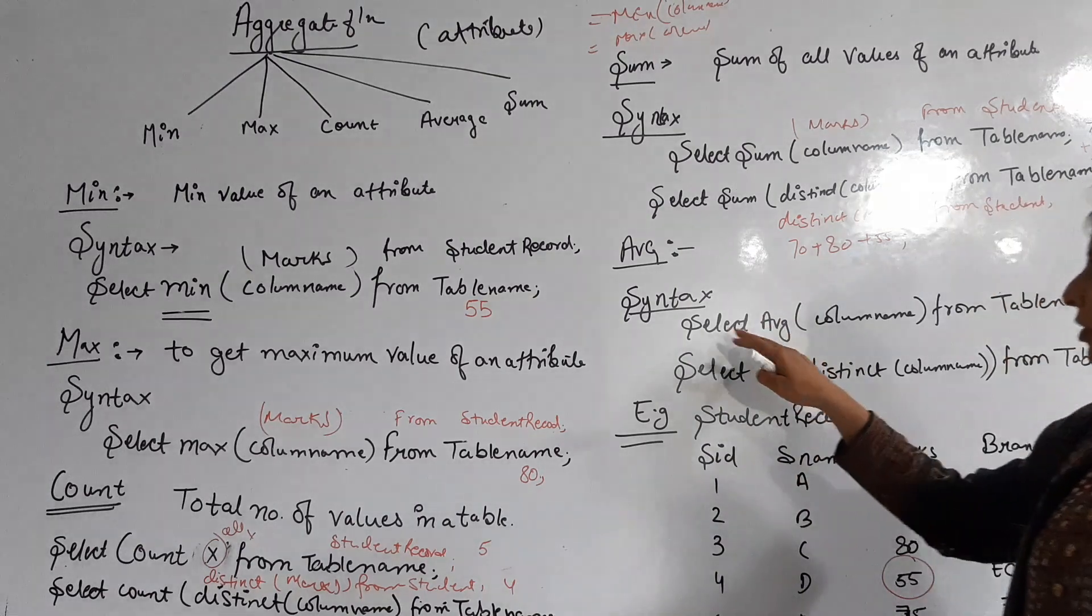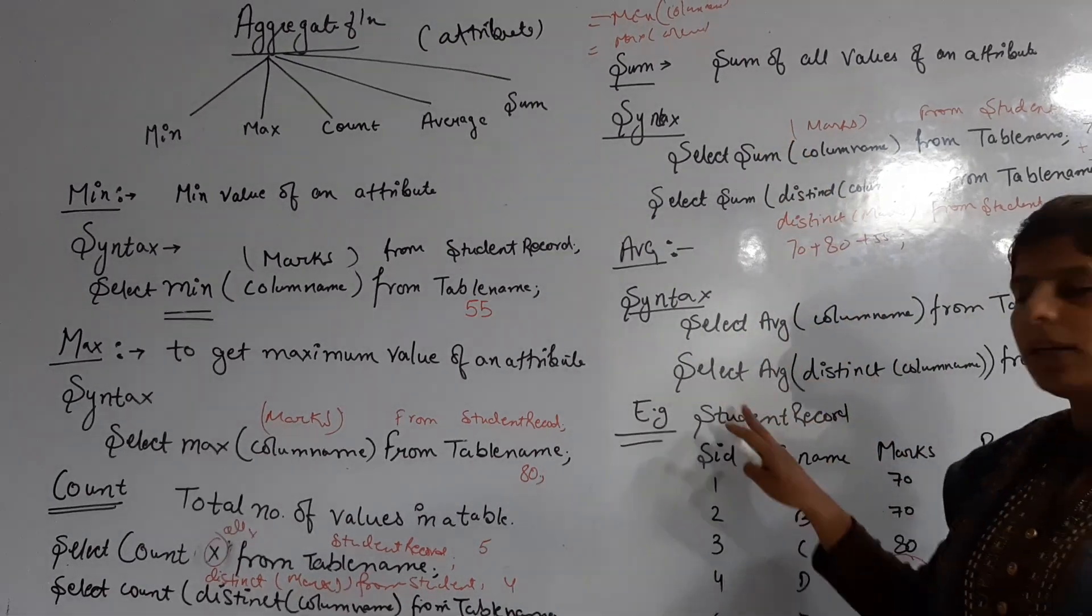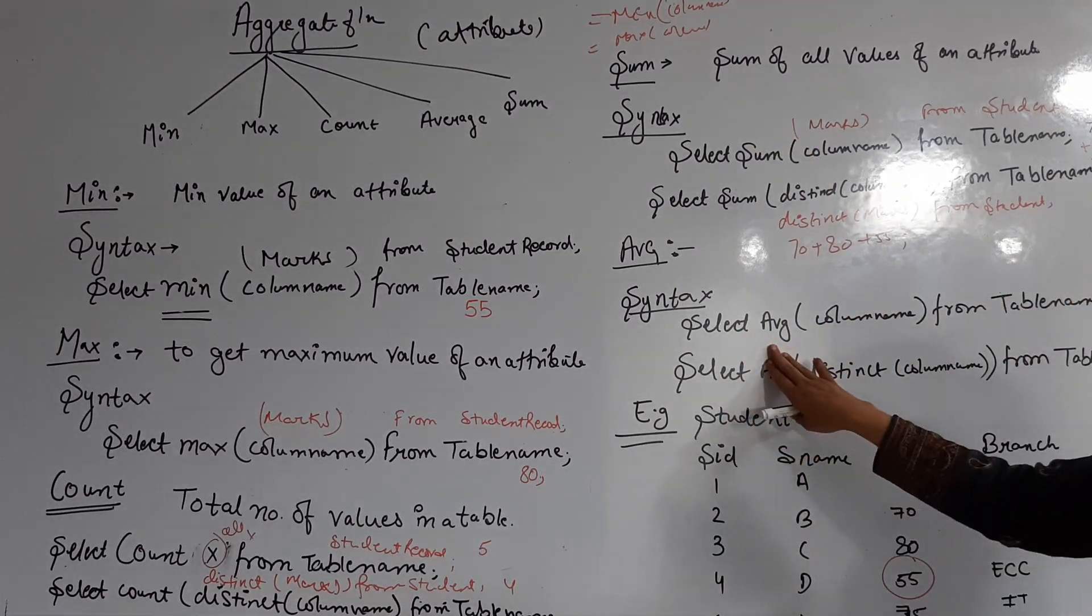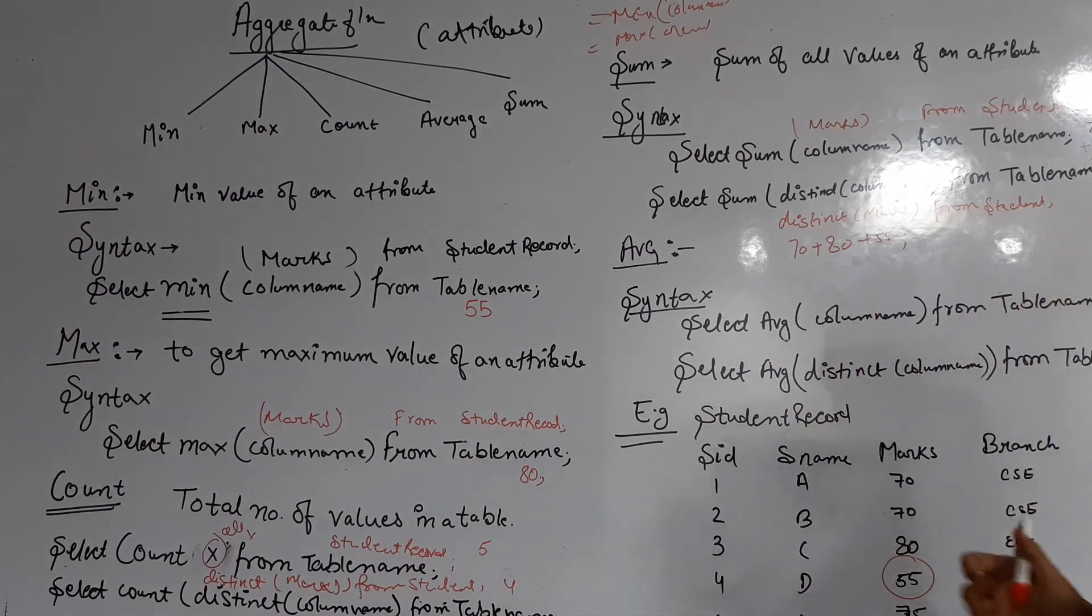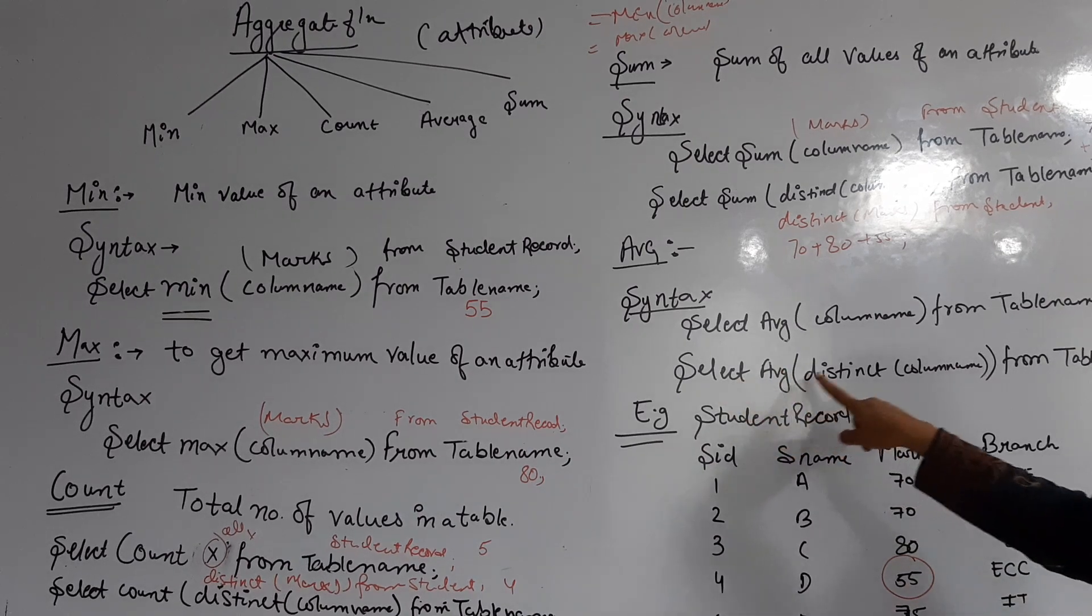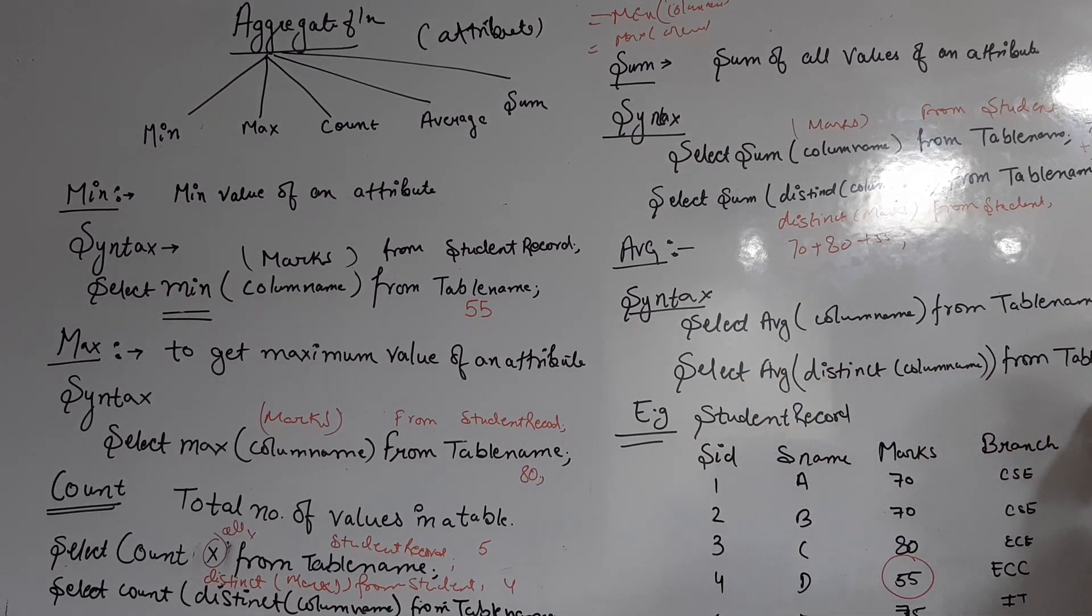Now we have to find the average. For average, the syntax is the same - we write the word AVERAGE here. So SELECT AVG(column_name) FROM table_name. To find the distinct average, we write SELECT AVG(DISTINCT column_name) FROM table_name.